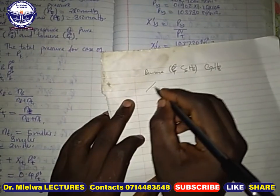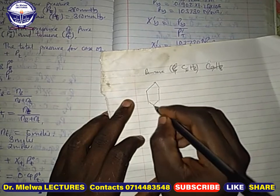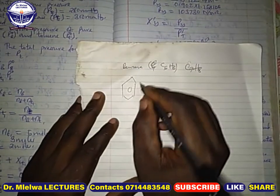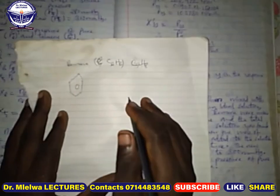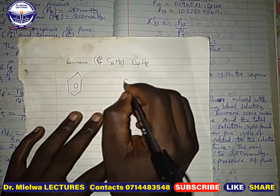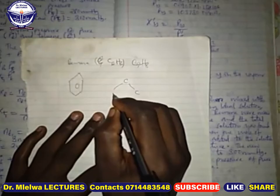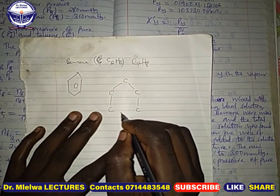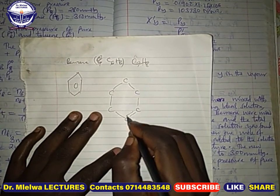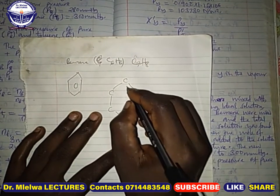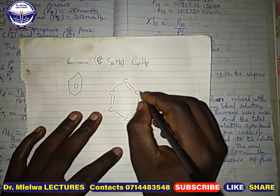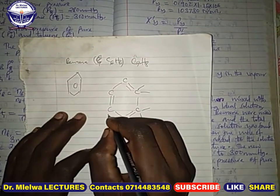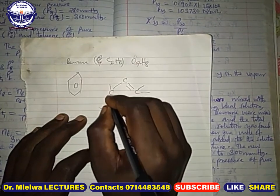The structure of benzene is like this. Benzene has six carbons. We can draw the structure of benzene as a ring of six carbons with double bonds alternating — double bond here, double bond here, double bond here. Each carbon atom has a hydrogen attached.